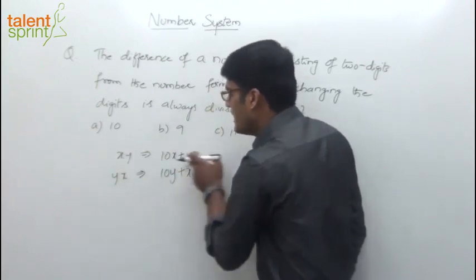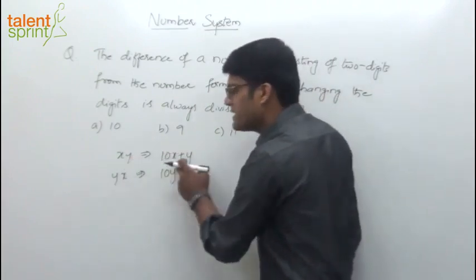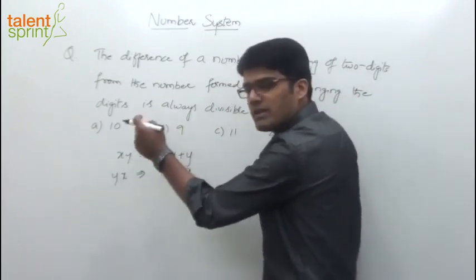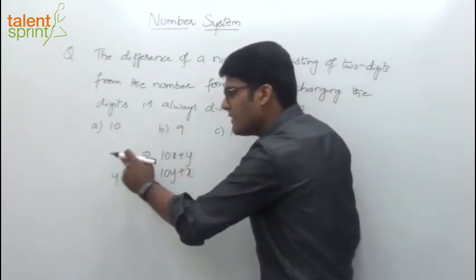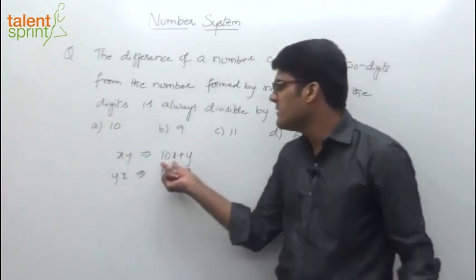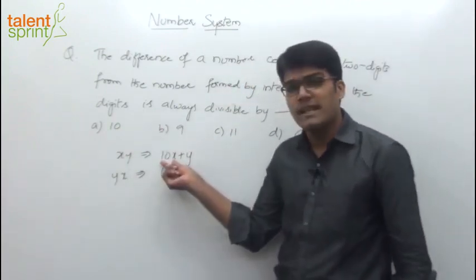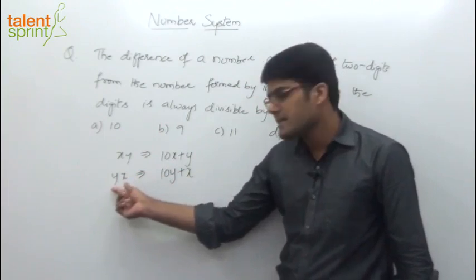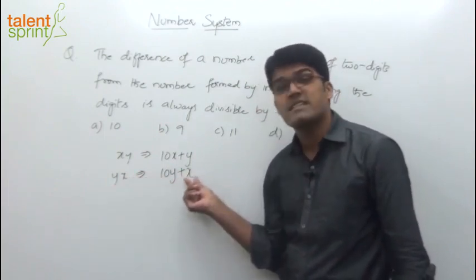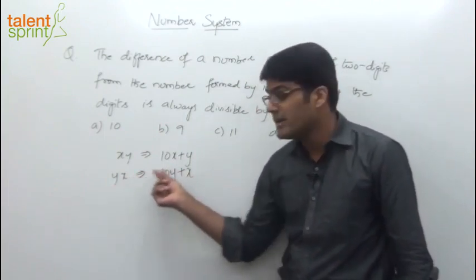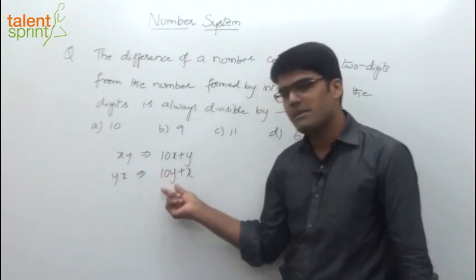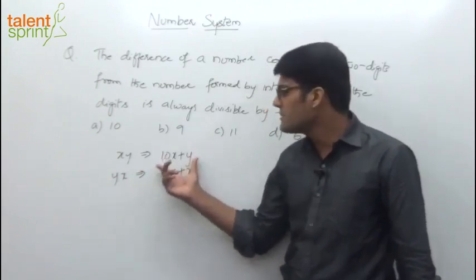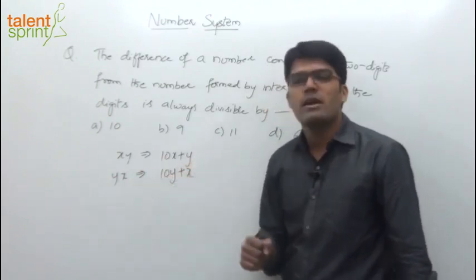If you take the first number xy — y is in unit's place, x is in 10's place. So the value should be multiplied by 10; whatever digit we have here, when you multiply it by 10, that gives its place value. So 10x plus y. The same is the case with the second number yx — unit's place is x, so x is multiplied by 1; 10's place is y, so y gets multiplied by 10. We add these two values to get the number — so 10x plus y and 10y plus x are the two numbers.